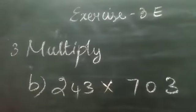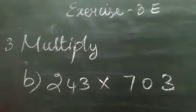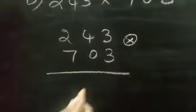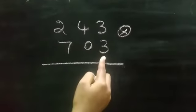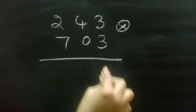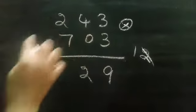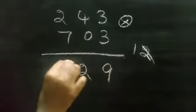Let's see third sum, multiply. I have written here B sum. 243 multiplied by 703. So first we want to multiply by 3 table. 3 times 3 is 9. 3 times 4 is 12. So 1 is carry over. 3 times 2 is 6. 6 plus 1, 7.